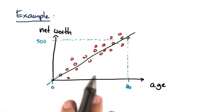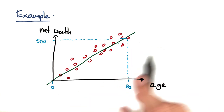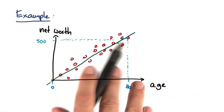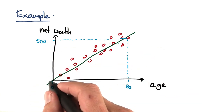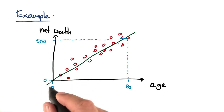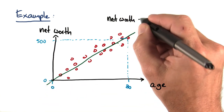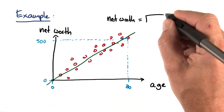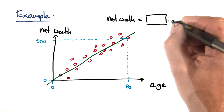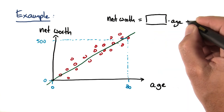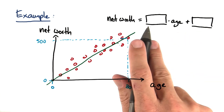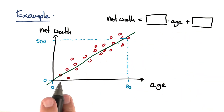I want you to give me an equation that describes this line that passes through the point (80, 500) and (0, 0) over here. So net worth should be some number times the age plus some other number. Can you fill in these two numbers that describe this graph?